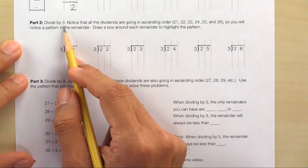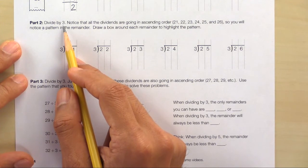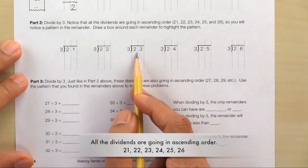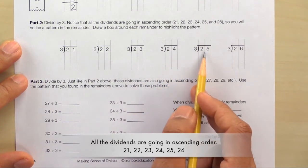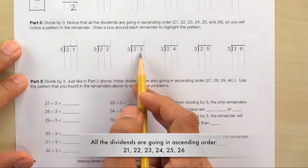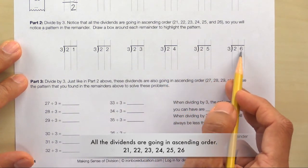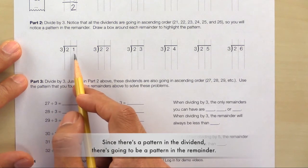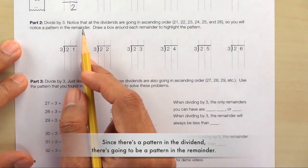Let's take a look at the pattern that students should notice in part 2. In part 2, we're going to divide by 3. Notice that all the dividends in each of these problems is going in ascending order. So here we have 21, 22, 23, 24, 25, and 26. And since there's a pattern in the dividend, there's also going to be a pattern in the remainder.